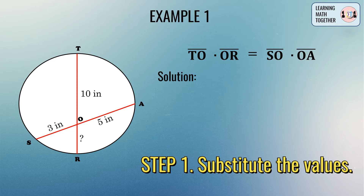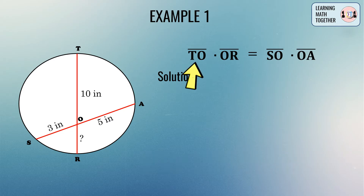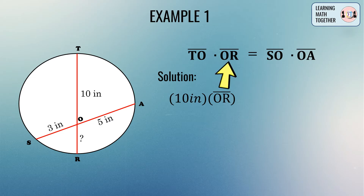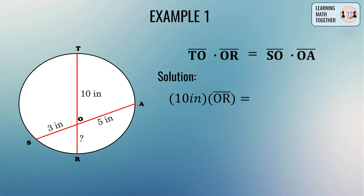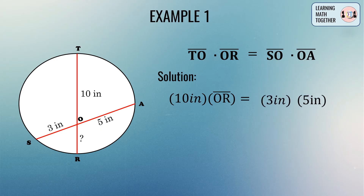The first step is to substitute the values given from the figure. Line segment TO is 10 inches, line segment OR is the unknown, so we copy line segment OR, then substitute the lengths of line segment SO and OA, which are 3 inches and 5 inches respectively.